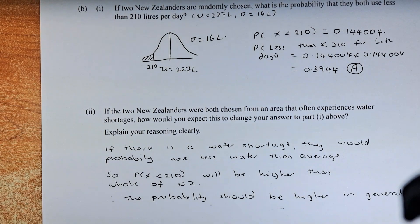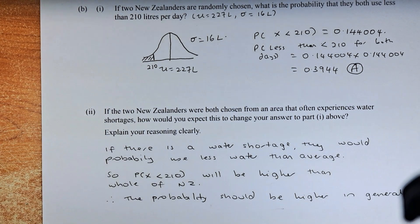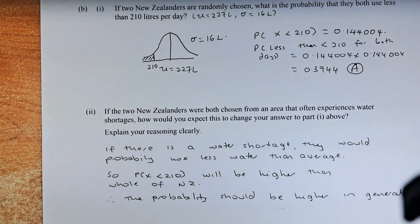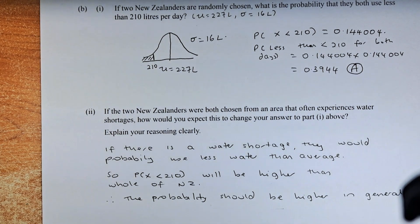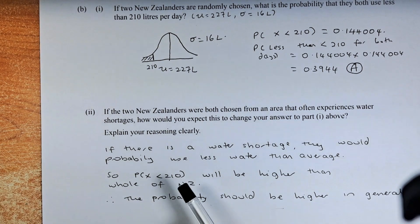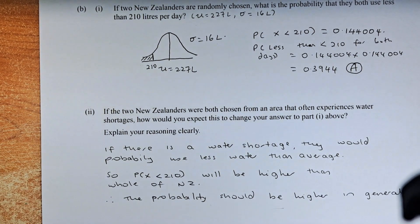Okay, if there's a water shortage, there are the chances that the probability that they will use less water than average. So probability that's less than 210 will be higher than the whole of New Zealand. Therefore, the probability to calculate that answer that will be higher in general.